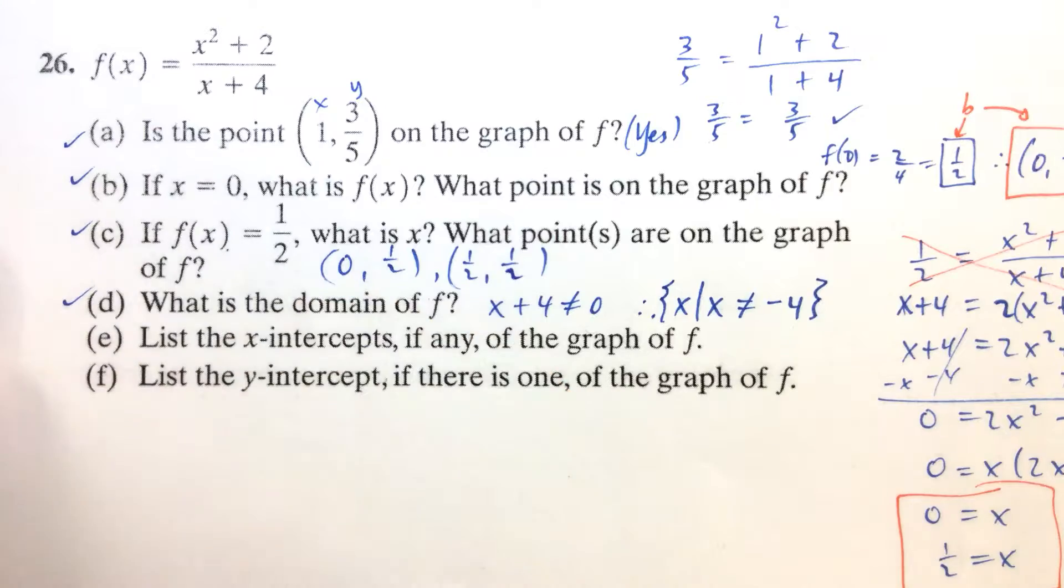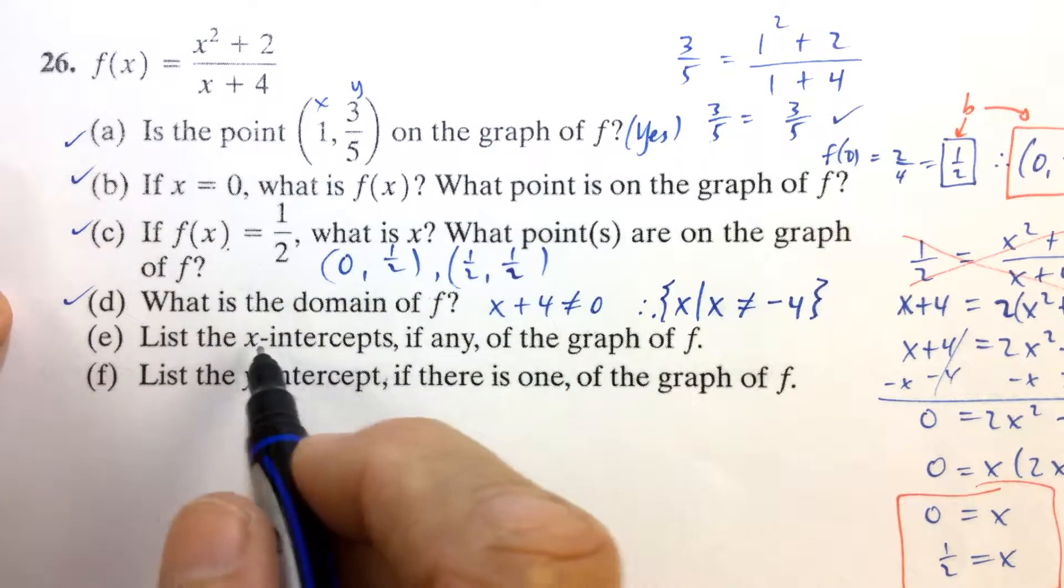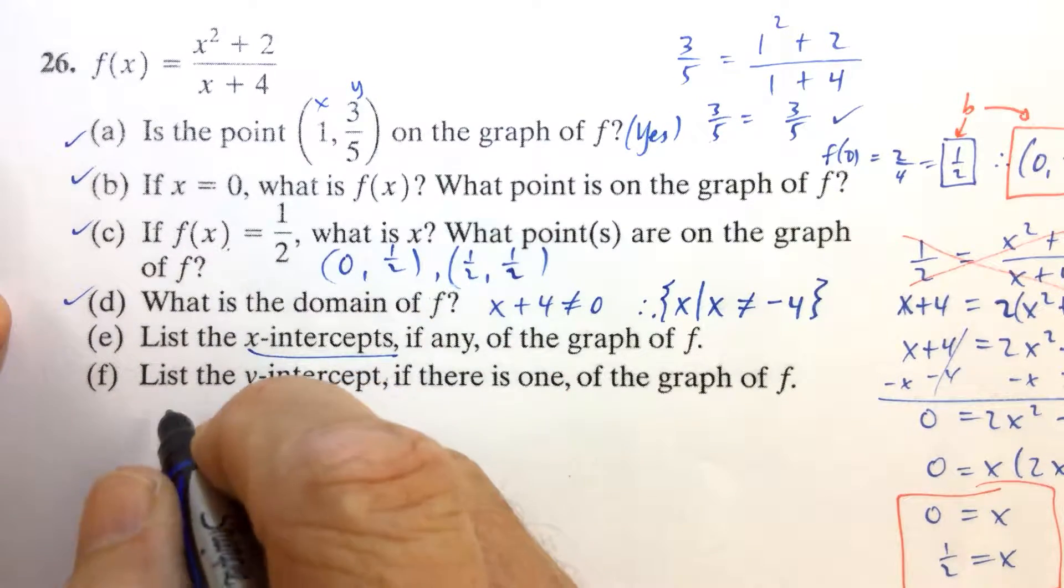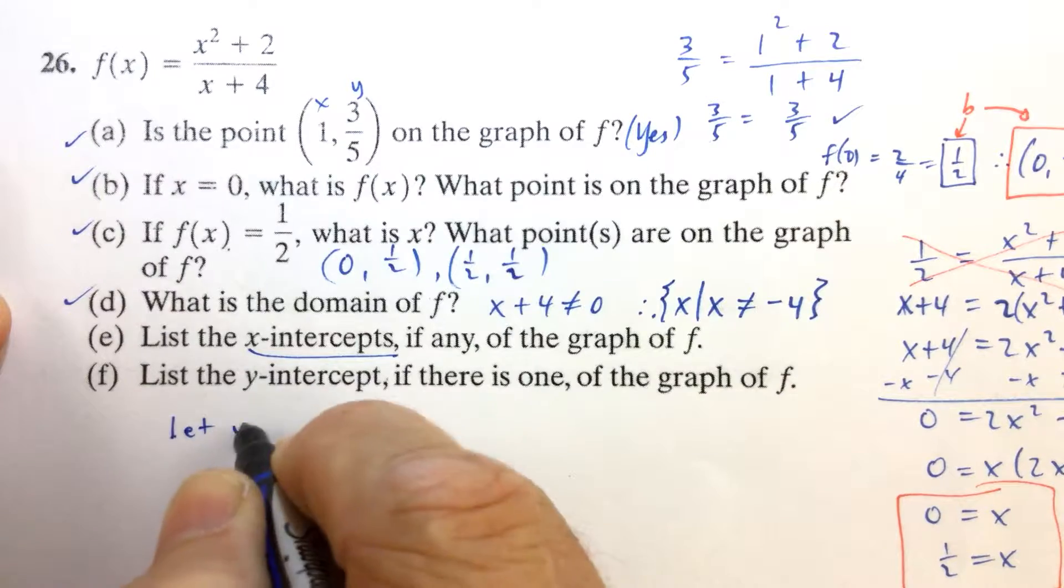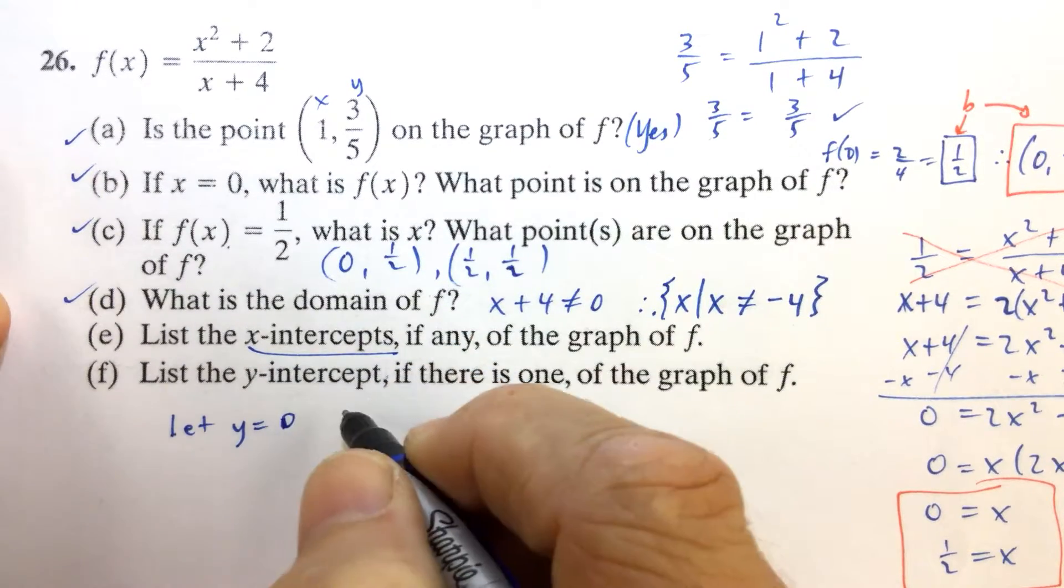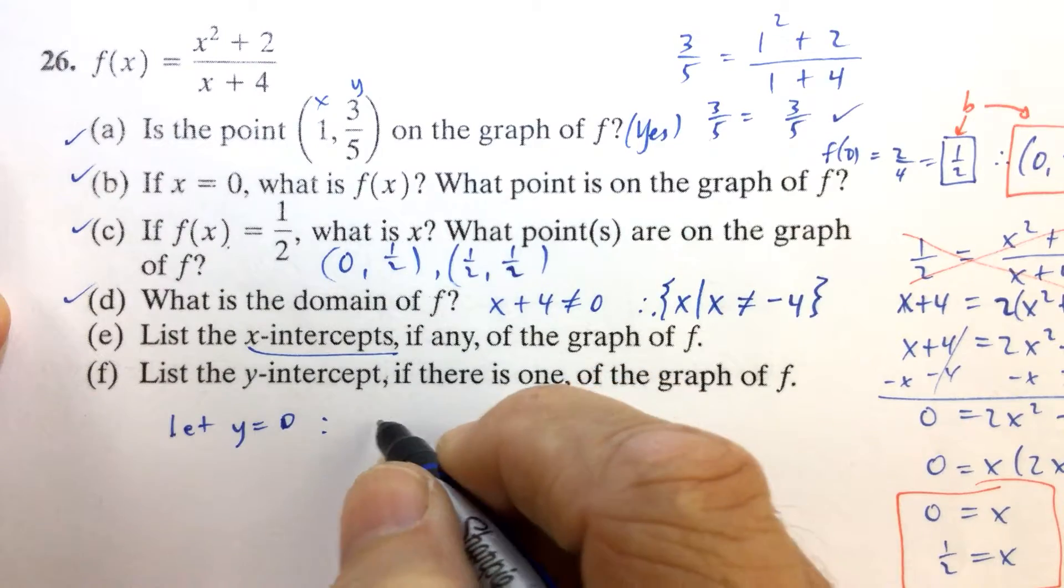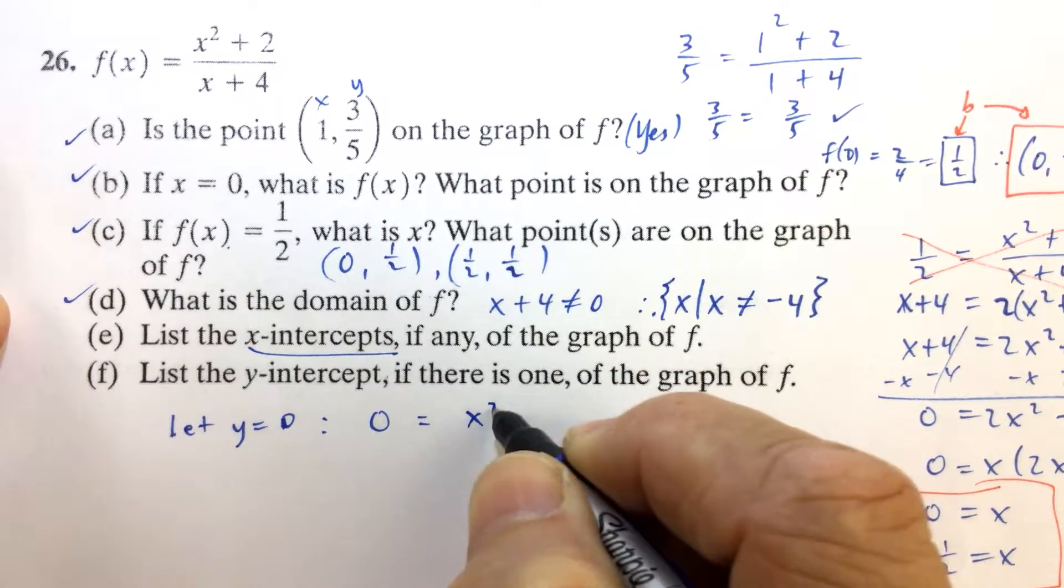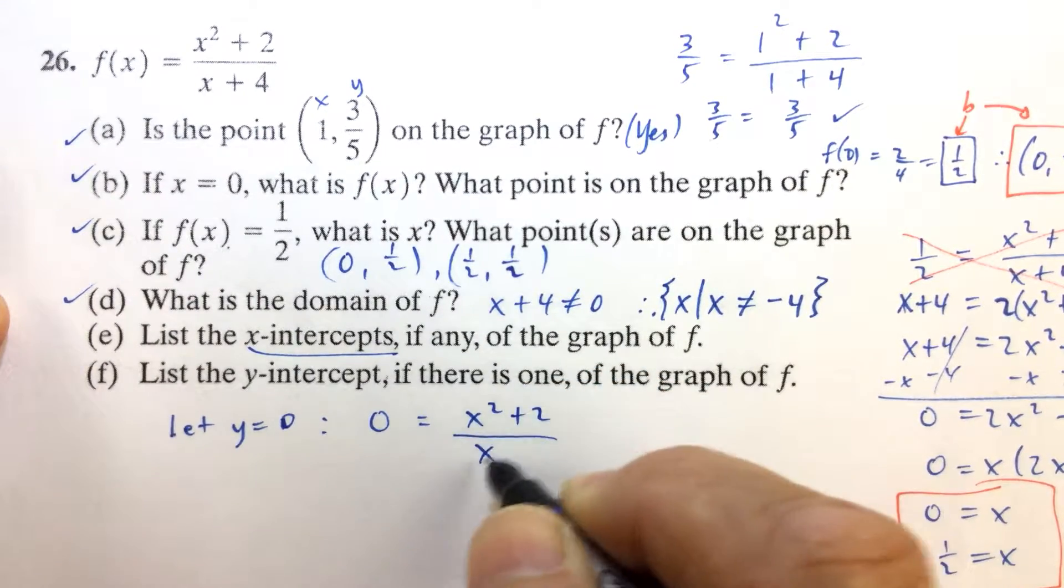And then part E, so that takes care of D. Part E lists the X-intercepts. Well, we should know that when we let Y equal 0, this is finding the X-intercepts. When we let Y equal 0, we get an equation: 0 equals X squared plus 2 all over X plus 4.